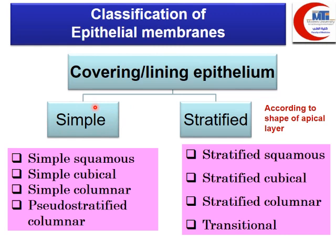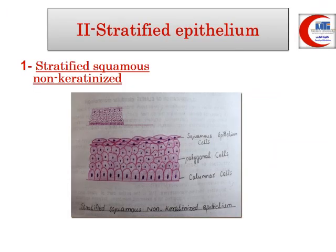Stratified epithelium is named according to the shape of the apical layer, giving four types: stratified squamous, stratified cuboidal, stratified columnar, and transitional. The first type, stratified squamous non-keratinized epithelium, is formed of basal columnar cells, three to four middle polygonal cells, and a top squamous layer — without keratin.